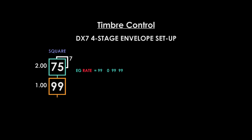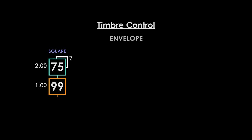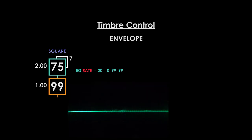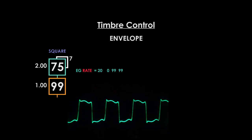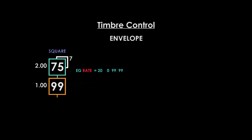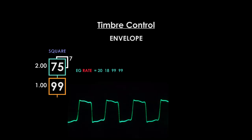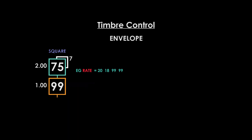Now we can adjust the rate values like a subtractive synth envelope without having to program levels as well. Select the modulator and adjust Rate 1 for the attack — set its value to 20. A high value makes it quicker and a low value makes it slower. Now change the decay: set Rate 2 to 18. We hear the modulator output level is decaying once the attack rate peaks. A high value makes this quicker and a low value makes it slower. Reset Rate 2 to 0.